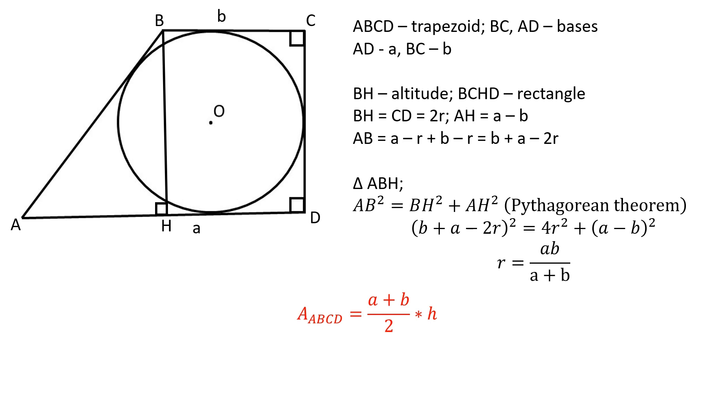The area of trapezoid ABCD is equal to half the sum of its bases times the altitude. Since the altitude is equal to 2 times the radius, the area of trapezoid ABCD is equal to the product of its bases, which equals 21.